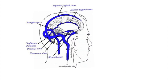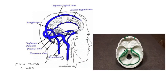Looking at another image, here we see the sigmoid sinus continuing through the jugular foramen to become the internal jugular vein. On this image we can also clearly see a number of other dural venous sinuses which are all joining and ultimately draining through the sigmoid sinus into the internal jugular vein. We can also view this from a slightly different perspective — looking from above onto the floor of the cranial cavity. This is the front of the skull and this would be the posterior aspect.